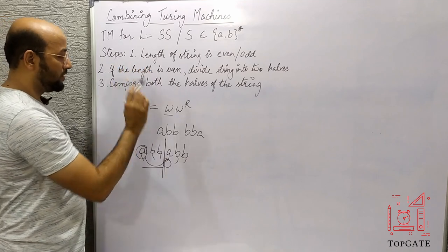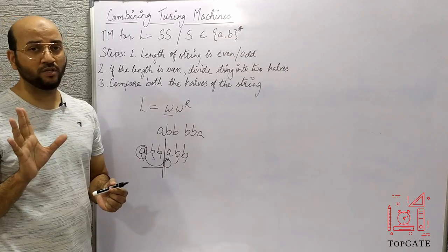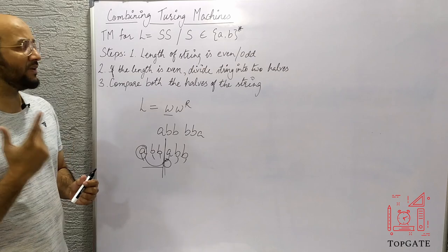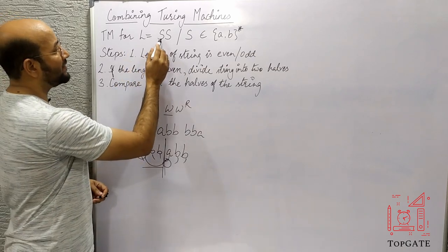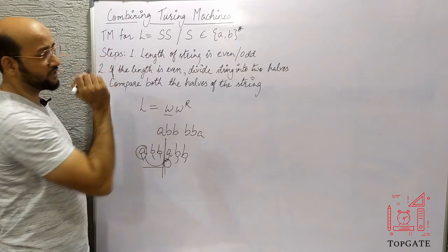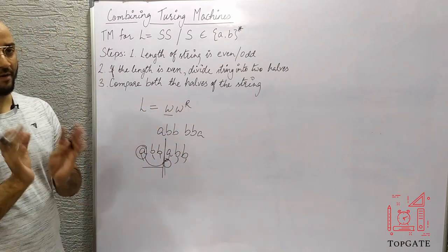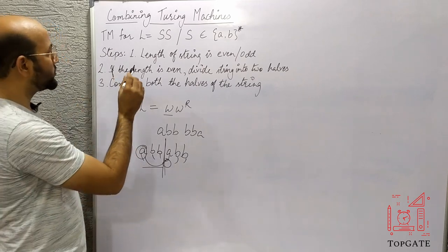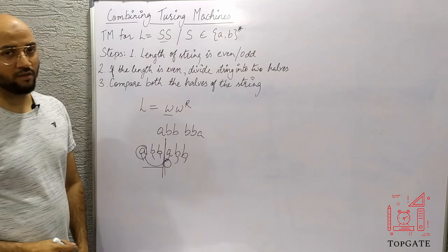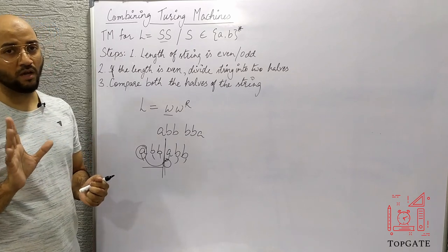We have to divide the string into two halves. First, we must make sure that the length of the string is even. If the first S has length two, then two plus two gives four — an even number. If the first S has length three, three plus three is six — still even. So in any case, L=SS always produces an even-length string. If the length is odd, it will never be accepted into this language.